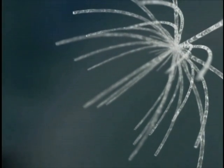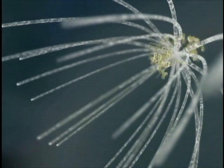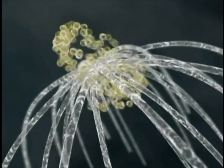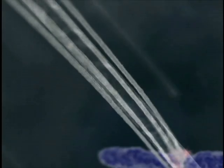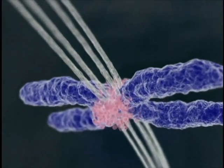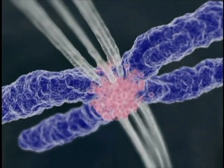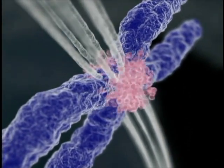The mitotic spindle forms in preparation for chromatid separation. At this stage, key roles are played by the aurora kinases. Aurora A is thought to act at the spindle poles. Aurora B acts at the kinetochores, ensuring that the chromosomes are correctly aligned to the mitotic spindle. It also has functions in cell division.